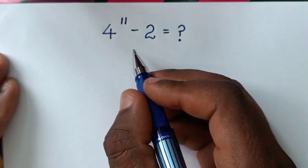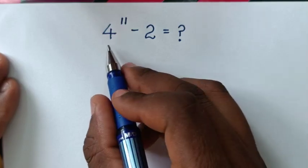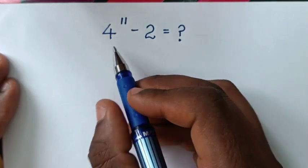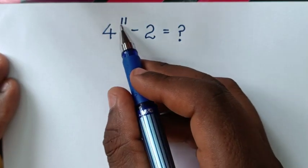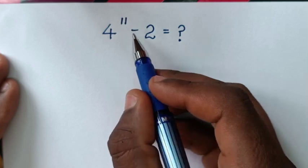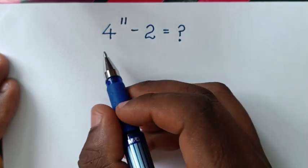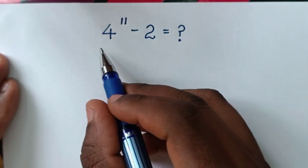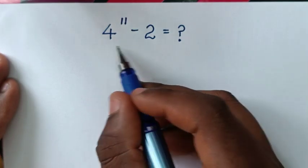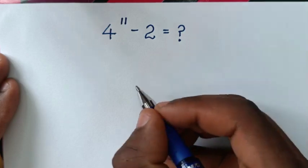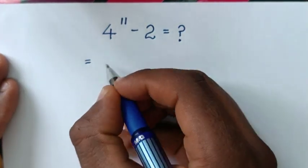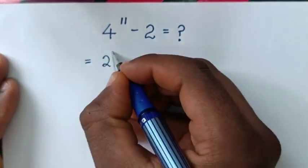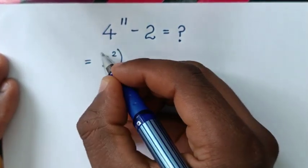Hello, you are welcome to solve this math problem which is 4 to the power of 11 minus 2. To solve this math olympiad problem without using a calculator, 4 is the same as 2 squared.